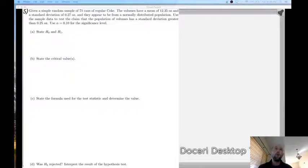In number 5 here, we are given a simple random sample of 71 cans of regular Coke. The volumes from this sample have a mean of 12.35 ounces and a standard deviation of 0.27 ounces, and they appear to be from a normally distributed population.